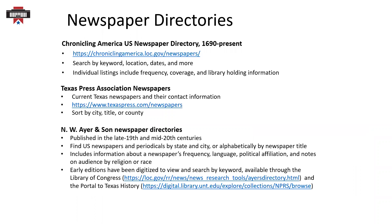If you are tackling a broad research topic and need to know which newspapers were operating in a particular time and place, or want to know more about a title, you'll want to use a newspaper directory. Chronicling America's U.S. Newspaper Directory can provide detailed information about newspaper titles. You can search by keyword, newspaper location, or dates. Title listings also include frequency, like daily or weekly newspaper, coverage, and library holdings. Check with the library listed directly to confirm availability. Current newspapers may have their own archives or back issues available to view or purchase. The Texas Press Association Newspapers webpage lists contact information for newspaper publishers in Texas by city, title, and by county.